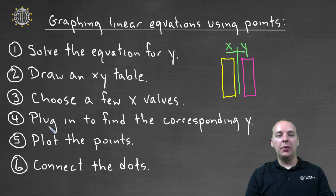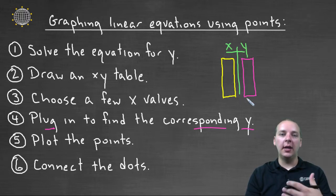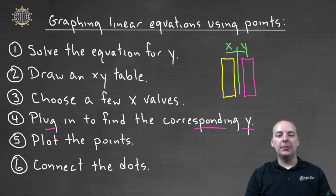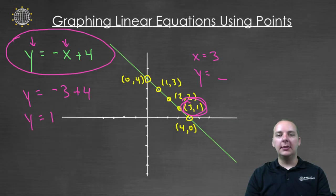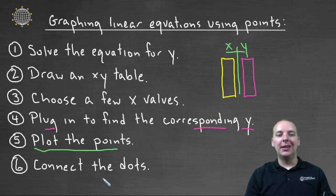What we'll get after we plug in those x values to find the corresponding y is we'll get a whole table full of (x, y) ordered pairs, a whole table of points. The last two steps are to plot the points, take those ordered pairs and put them on a graph. If done correctly, they should line up in a straight line. That should very clearly reveal what the graph of the linear equation should be. It's simply the line that goes through those points that you found. The last step, number six, is to simply connect the dots, and you've got your graph of your linear equation.